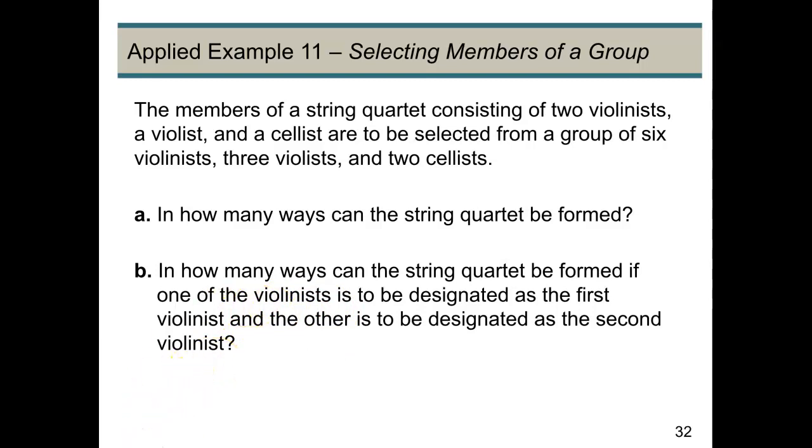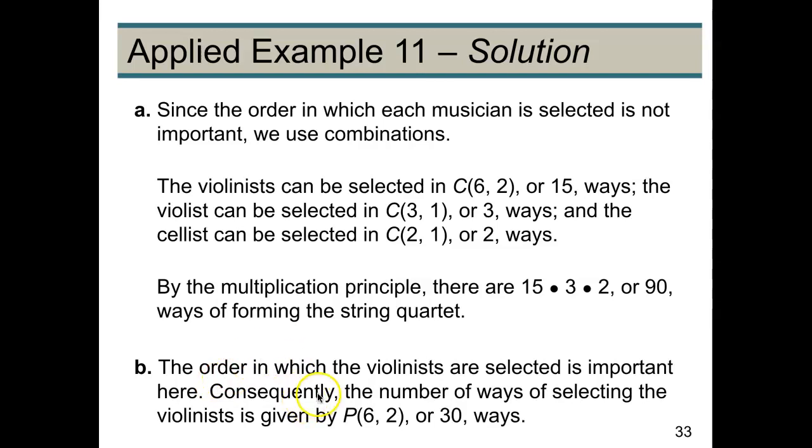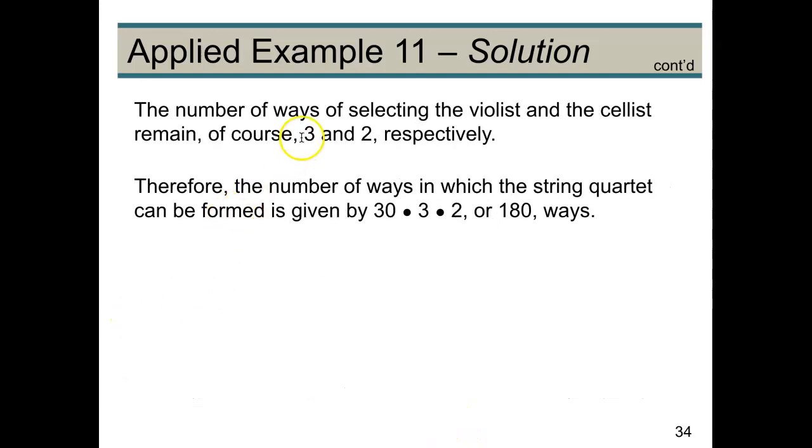So to select the violinists, we're going to have to use permutations. So six violinists choosing two with a first and second, there are 30 ways to do that. And then the ways of choosing the other seats remain three and two. So the way to choose a string quartet when we have a first and second chair of violin are 30 times 3 times 2, or 180 ways.